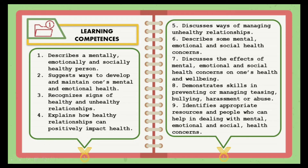Number one: describes a mentally, emotionally, and socially healthy person. This kind of person feels good about themselves and is not overwhelmed by emotions such as fear, anger, love, jealousy, guilt, and anxiety. Number two: suggests ways to develop and maintain one's mental and emotional health — talking about your feelings, keeping active, eating well, drinking sensibly, keeping in touch, asking for help, taking a break, doing something you're good at, and accepting who you are. Number three: recognizes signs of healthy and unhealthy relationships. That's all for this part.